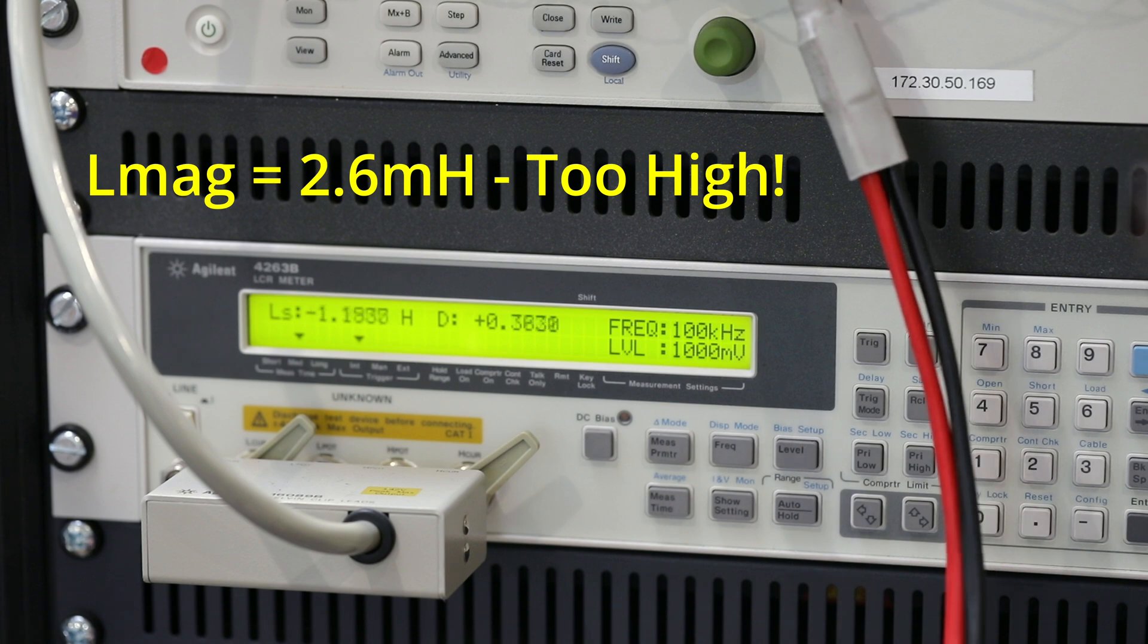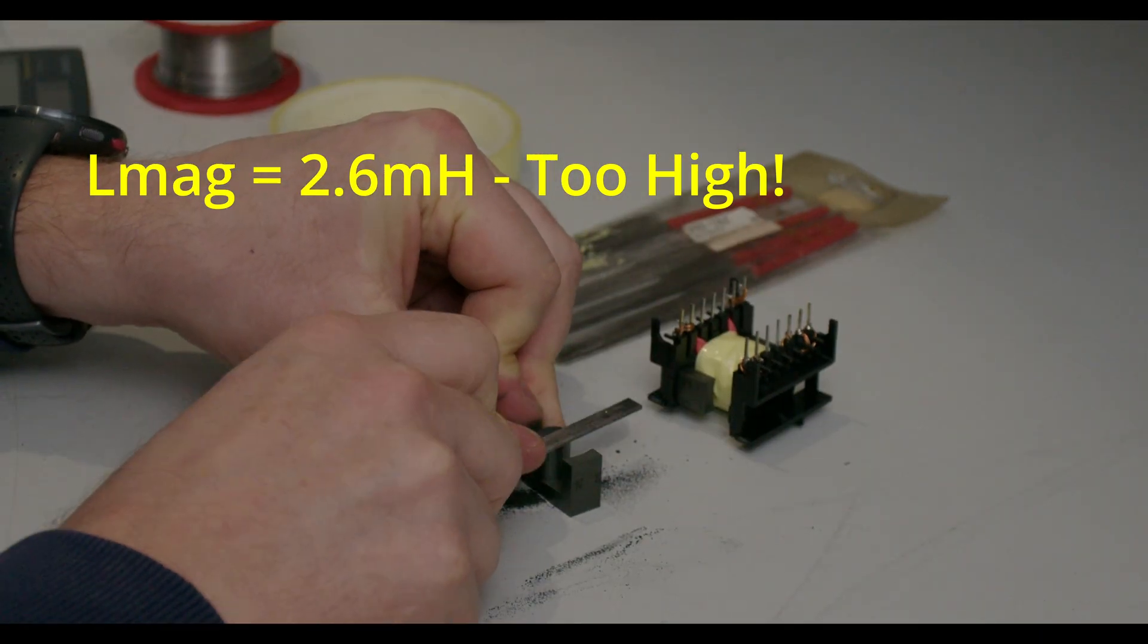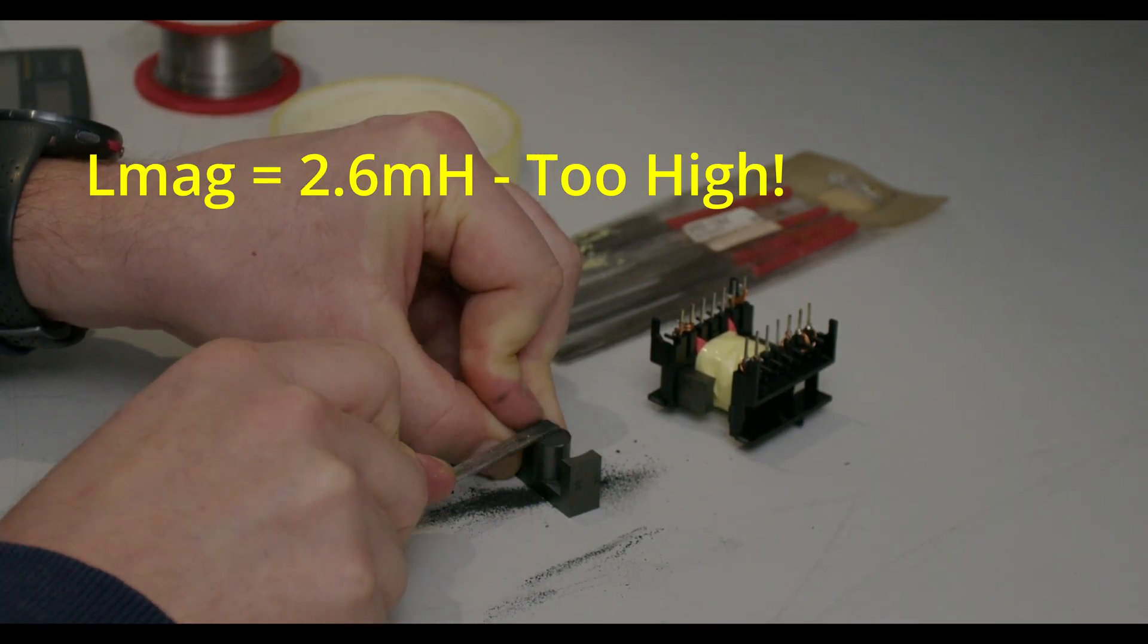We need to gap the centre leg of the transformer, so we use a small needle file to grind away ferrite material bit by bit.